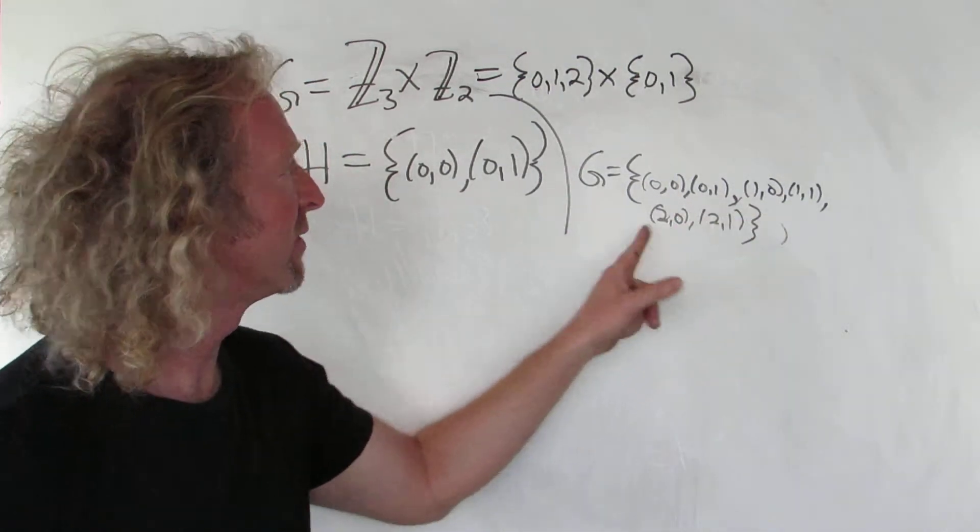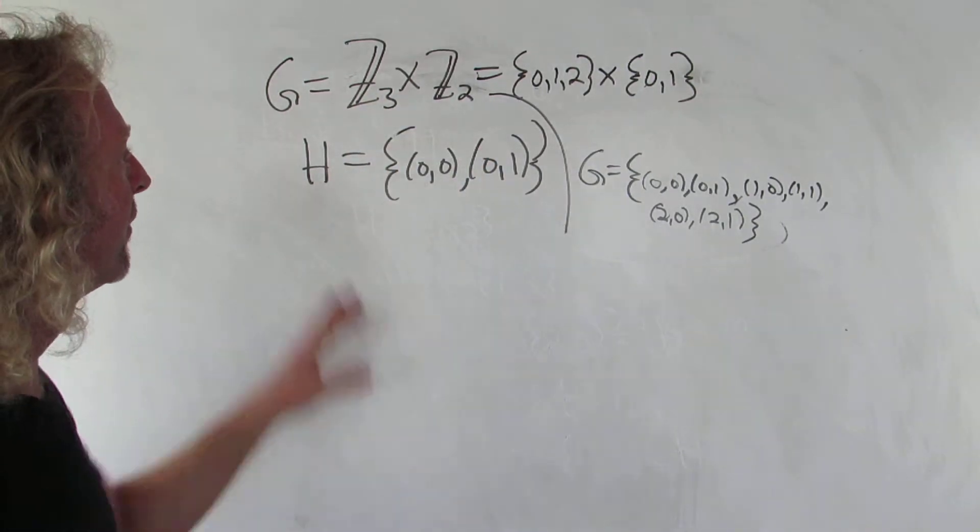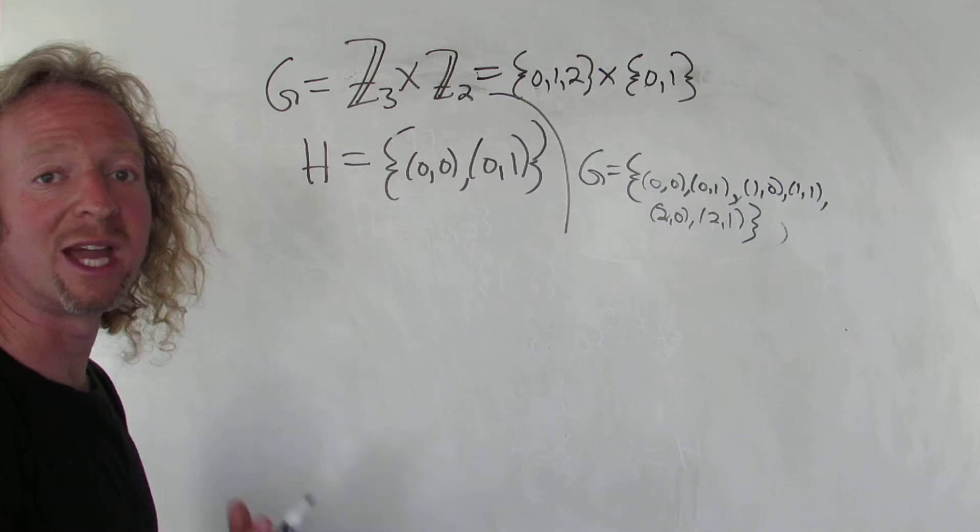So that would be our group. And it has 6 elements, right? 1, 2, 3, 4, 5, 6. 3 times 2 is 6. Easy way to tell the order of the group. The order of the group is how many elements are in the group.